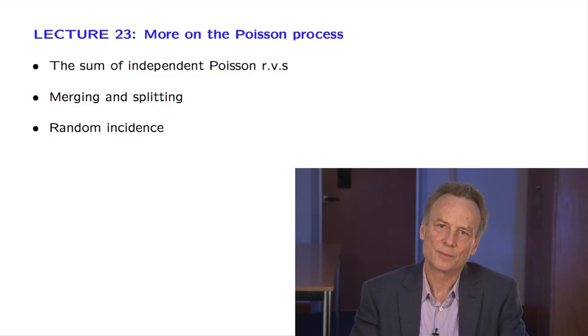We will start by arguing that the sum of independent Poisson random variables is Poisson, but we will then establish the much stronger statement that if we merge two independent Poisson processes, we again obtain a Poisson process.